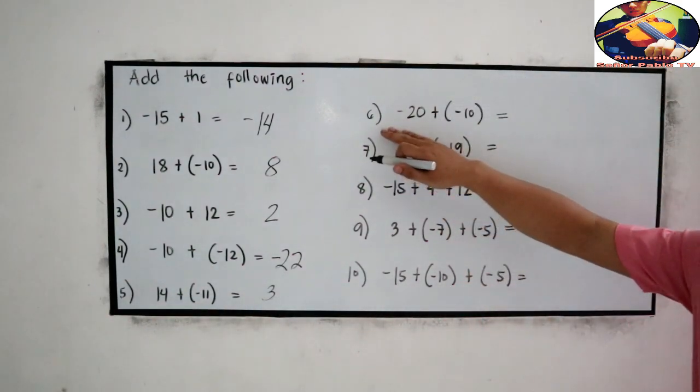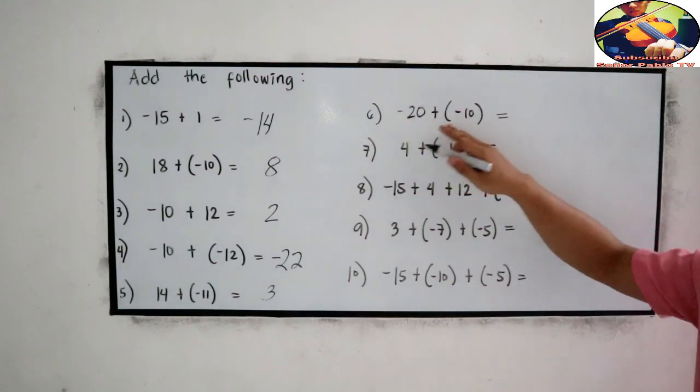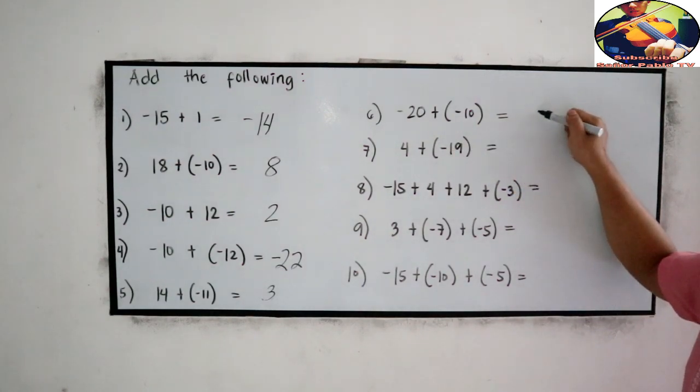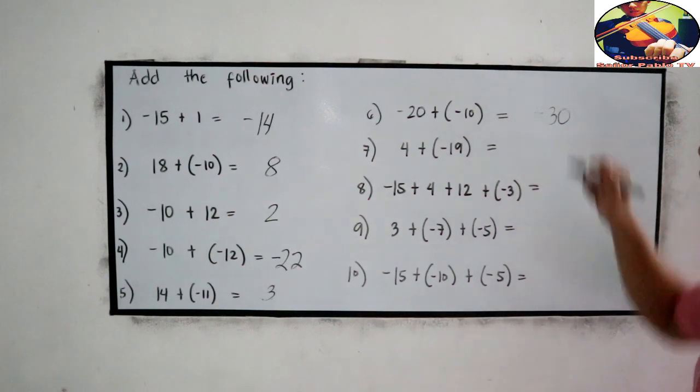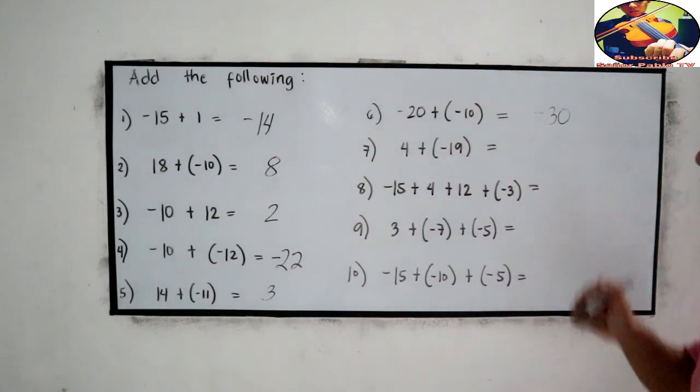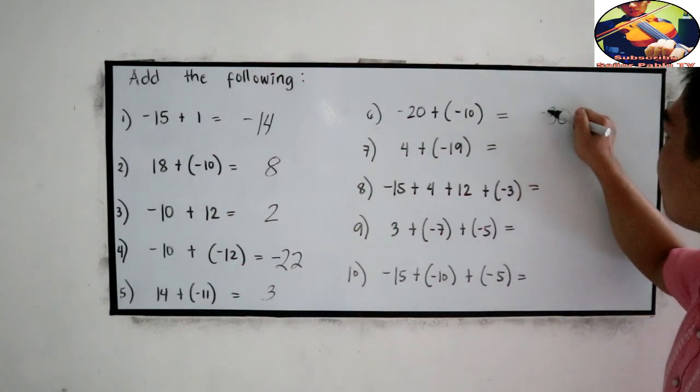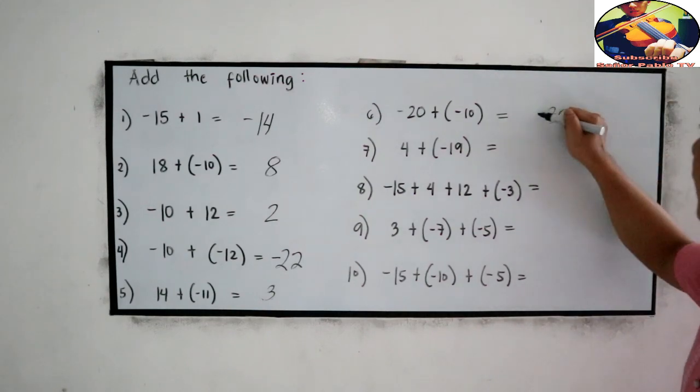Number 6: Negative 20 plus negative 10. Both are negative. So add the numbers. 20 plus 10. Negative 30.